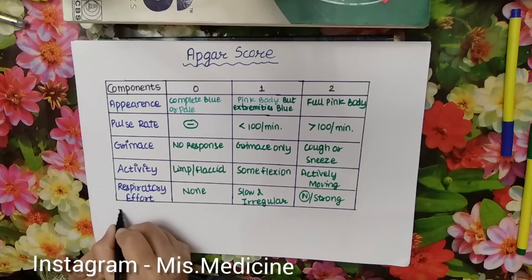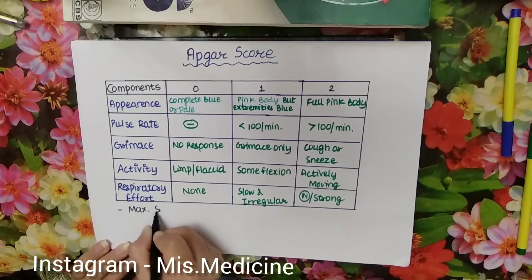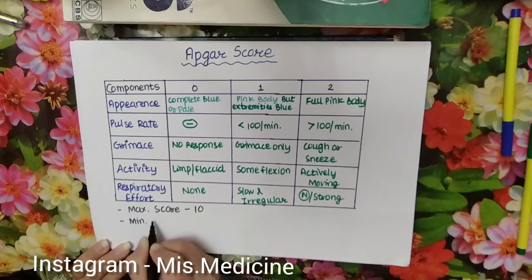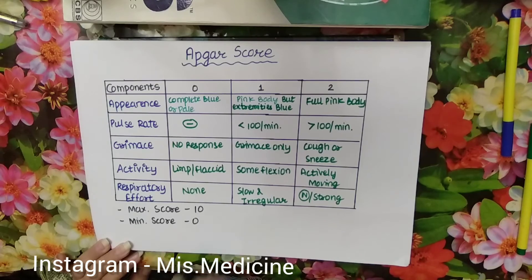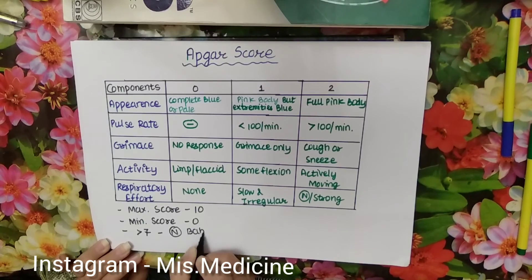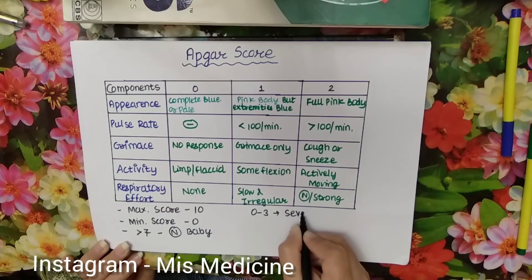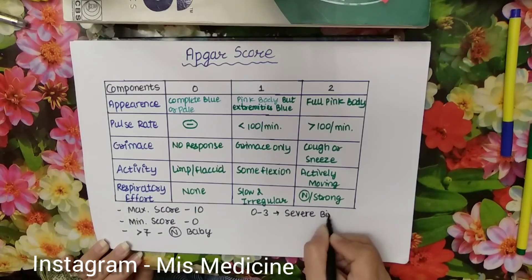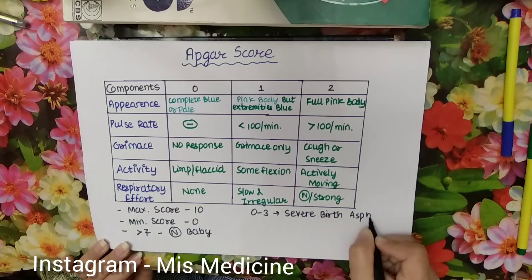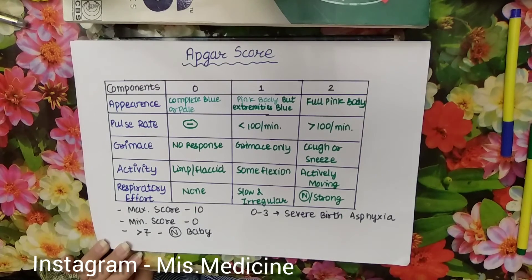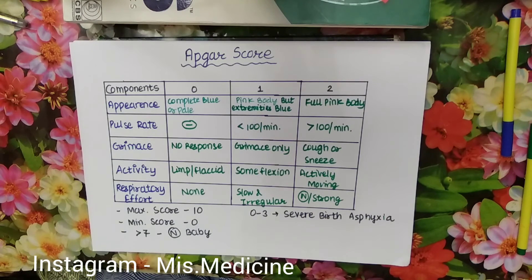Here are some key points. The maximum APGAR score is 10 and the minimum is 0. If the score is more than 7, the baby is normal. If the score is 0 to 3, it indicates severe birth asphyxia. The APGAR score is documented at 1 minute and 5 minutes of life. It has no role in neonatal resuscitation but has prognostic importance.